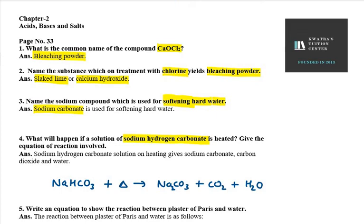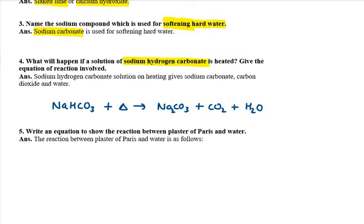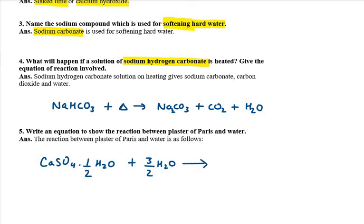Question number 5: write an equation to show the reaction between plaster of Paris and water. The formula of plaster of Paris is CaSO₄·½H₂O. When we add 3/2 H₂O (that is 1 and a half H₂O) to it, we get CaSO₄·2H₂O. This is the reaction between plaster of Paris and water.